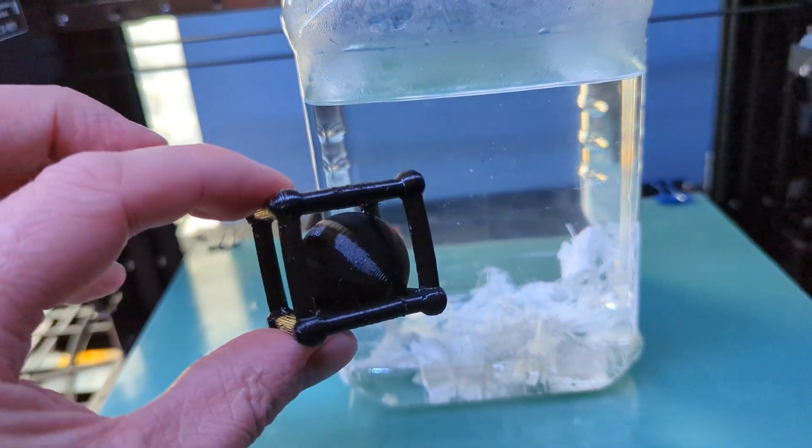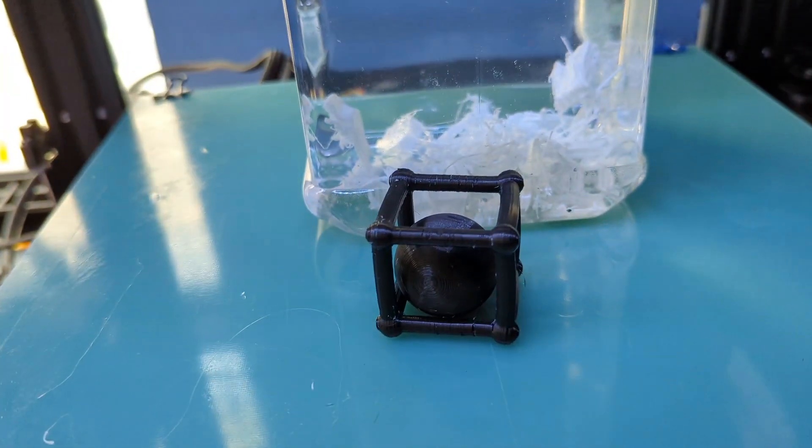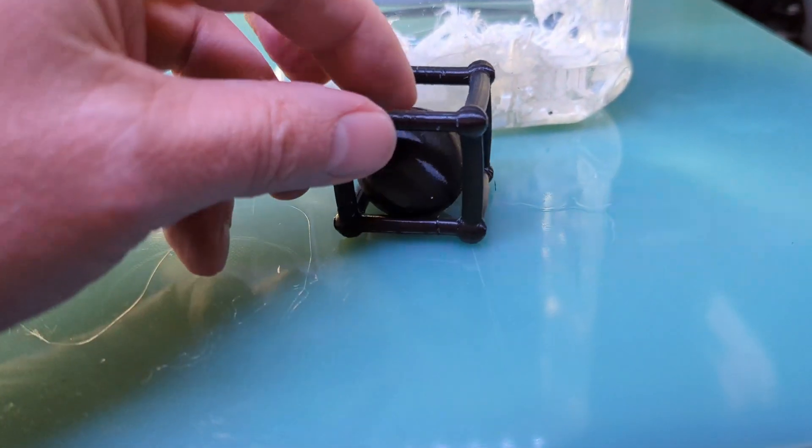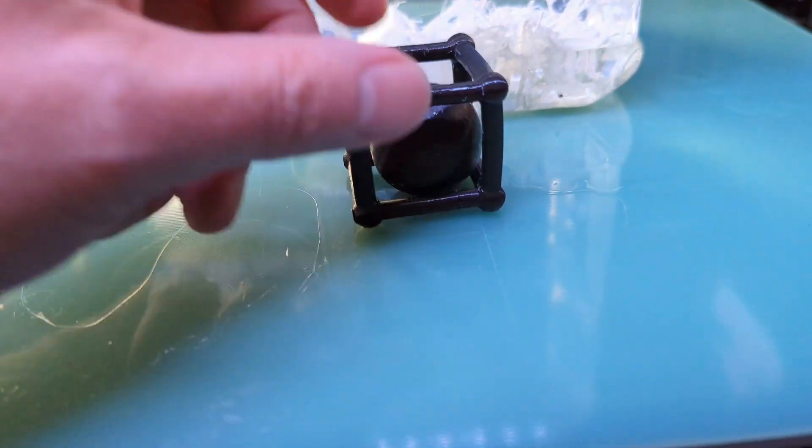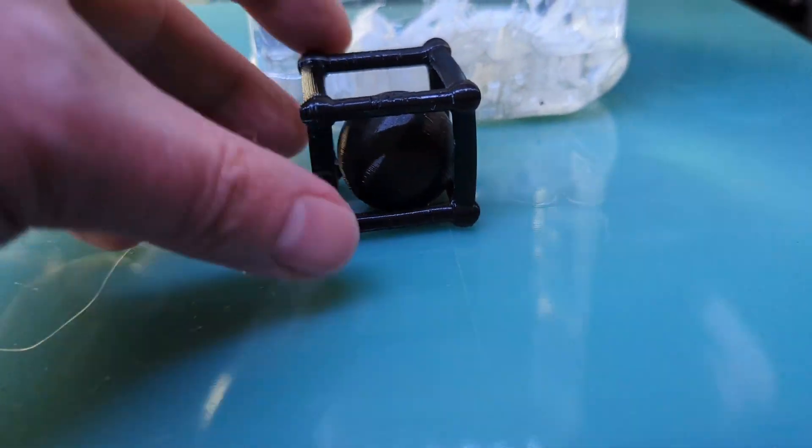So that is one of the biggest benefits of using PVA as a support material because it can soften, it can dissolve, you have no mess really left behind, and you get a nice quality print out of it.